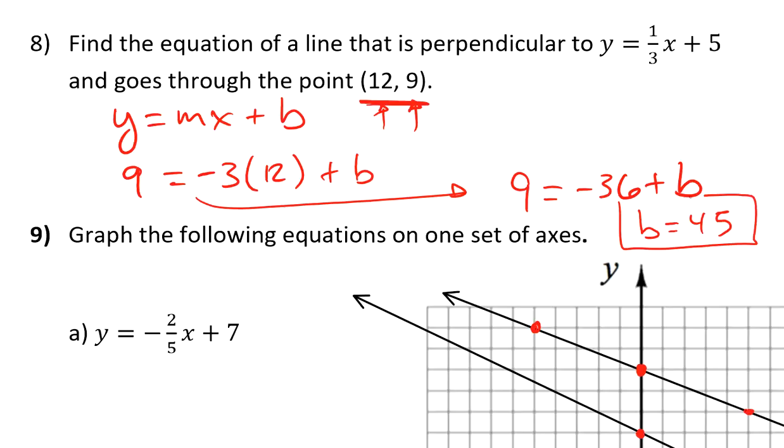So I know my y-intercept is 45, and I know that my slope has to be negative 3. So the equation of my line is y equals negative 3x, and then we're going to add to that the number 45.